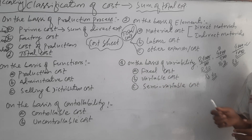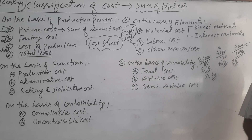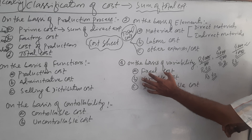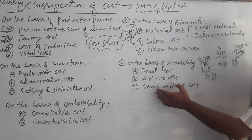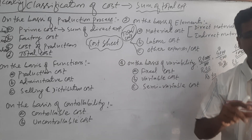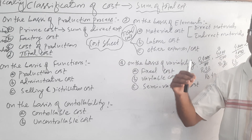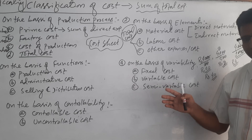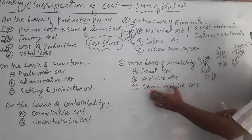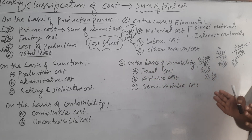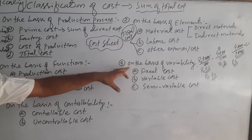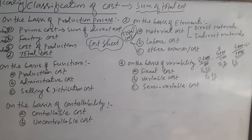Semi-variable cost means it is a mix of both fixed cost and variable cost. Fixed cost is constant, but variable cost is changeable. Up to some extent the cost is fixed, and if we consume more quantity or more units, then the variable cost portion is added. The example of this is the telephone bill — a base amount is fixed cost, and then per call it becomes variable. Similarly, water bills and electricity bills are also semi-variable. Ultimately, the sum of fixed cost, variable cost, and semi-variable cost is total cost. On the basis of variability, the purpose is again to find out the total cost of any goods and services.